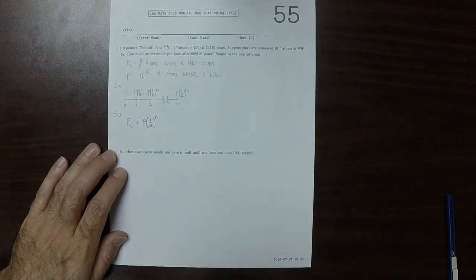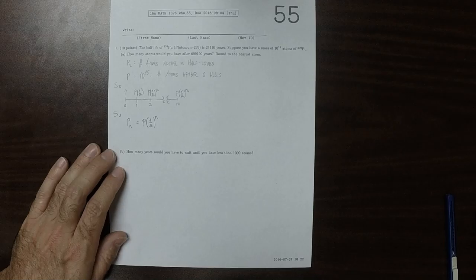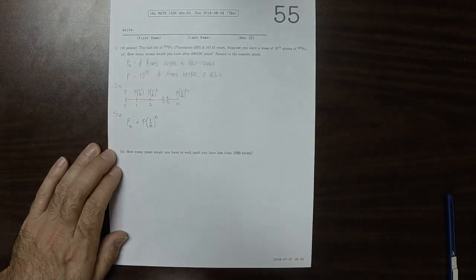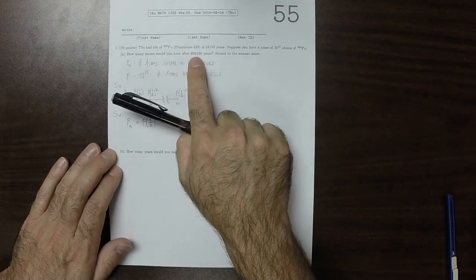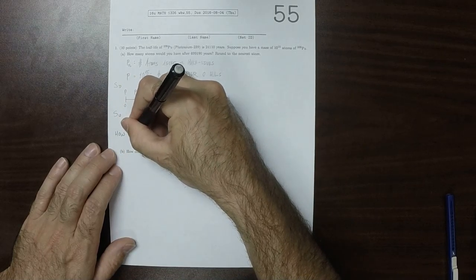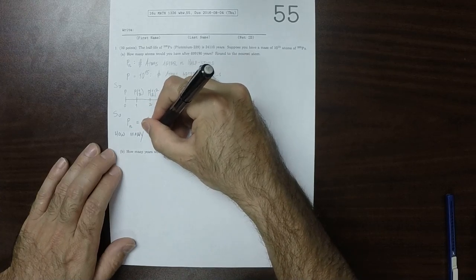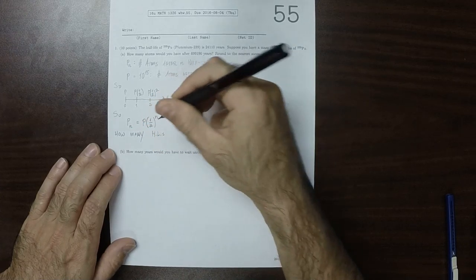So our formula for PN, this is P, the initial amount, multiplied by half to N, where N is the number of half-lives. Okay, so the question is, how many half-lives occur?